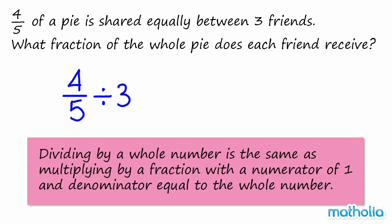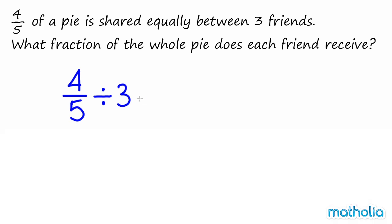Dividing by a whole number is the same as multiplying by a fraction with a numerator of 1 and a denominator equal to the whole number. In this case, dividing by 3 is the same as multiplying by 1 third.